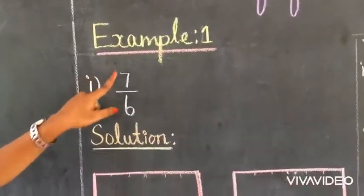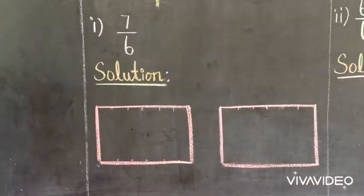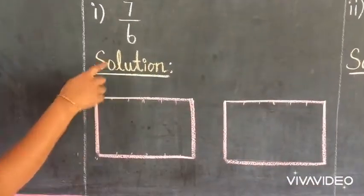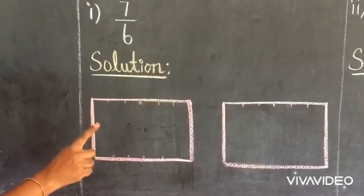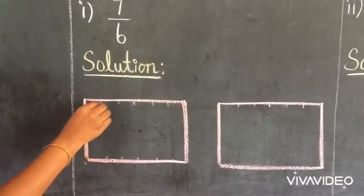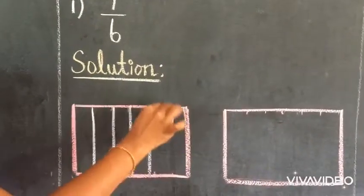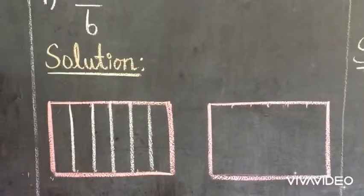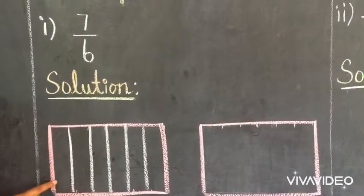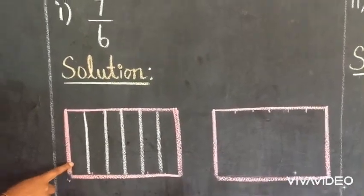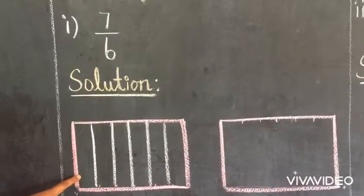Let us take an example: 7 by 6. The fraction 7 by 6 represents one thing divided into 6 equal parts and we share 7 parts. Can we be able to do this? 1 by 6 — that is, 6 equal parts and share 7 parts.